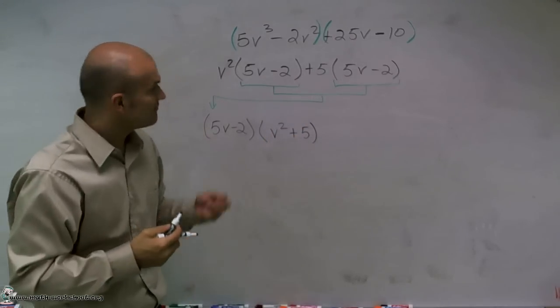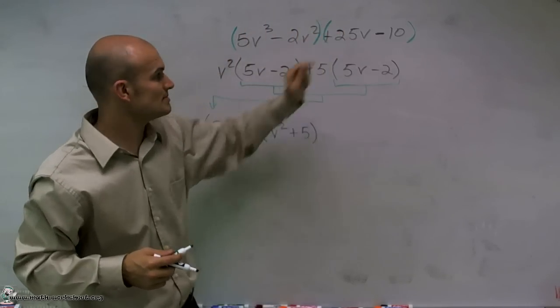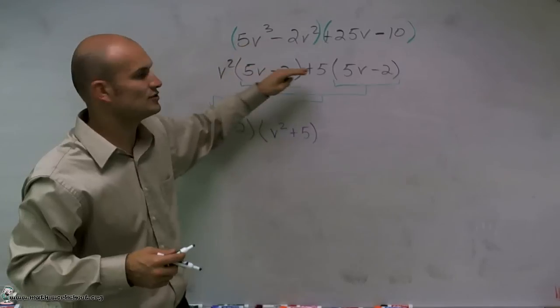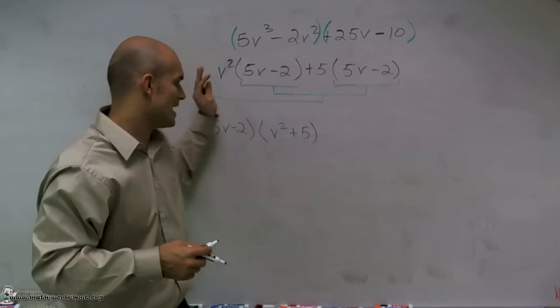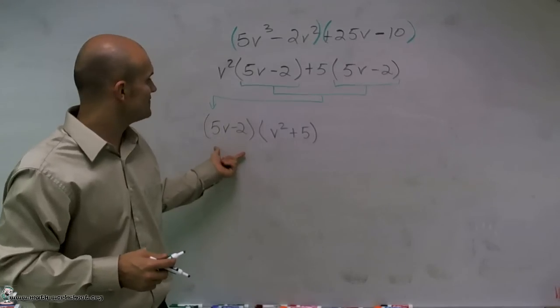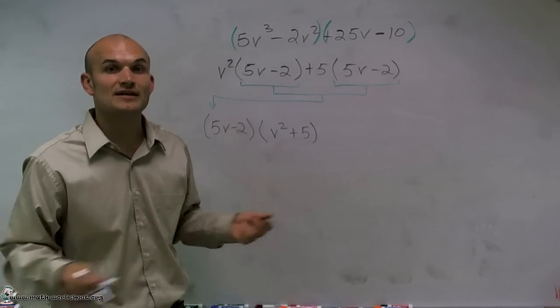Therefore, to factor by grouping, when you have four terms, I group the first two terms, I factor the GCF out of both of those terms, then I factor that term out, and I'm left with 5V minus 2 times V squared plus 5. And that is how you factor by grouping.